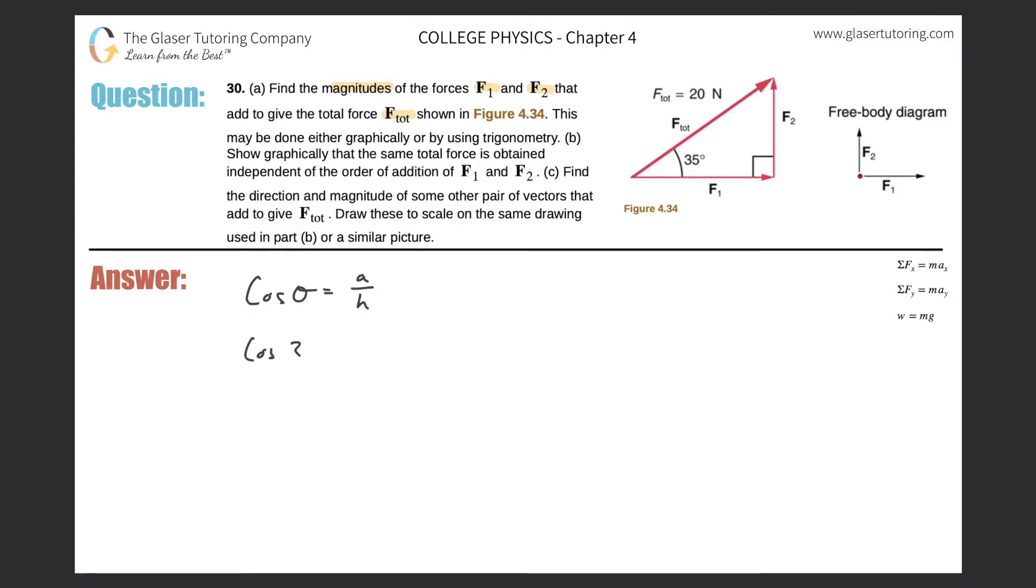So let's do cosine of theta equals the adjacent side over the hypotenuse. So the cosine of that angle, 35, will equal the adjacent side, which was F1, divided by the hypotenuse value of 20. Now all we need to do is cross-multiply. This is really over 1.